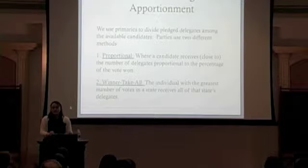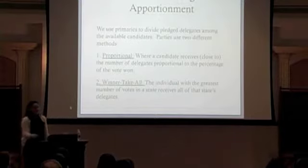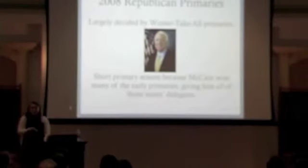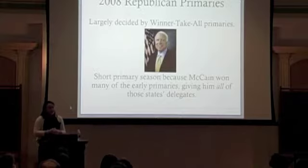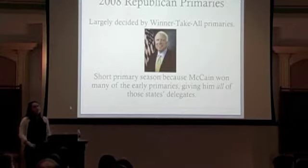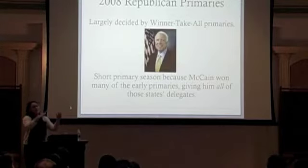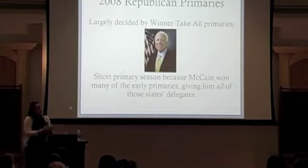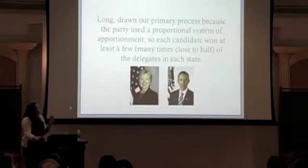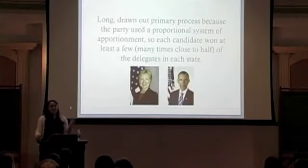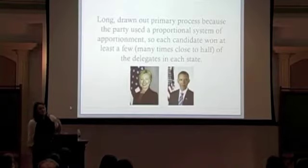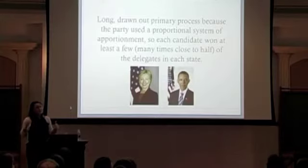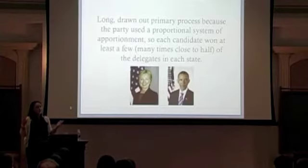Let's consider the Republican race in 2008. The Republican Party's primaries were surprisingly short because John McCain won a lot of the early primaries, and because the Republican Party used the winner-take-all method, McCain won all the delegates from those states, sealing the nomination really early on. The Democrats, however, were a different case. The Democrats used a proportional method for dividing delegates, which led to a long, drawn-out, largely indecisive primary season. That's because Clinton and Obama in many cases won close to half of the vote in each state, which means they split delegates in most of the contested states — so there really was no clear winner.